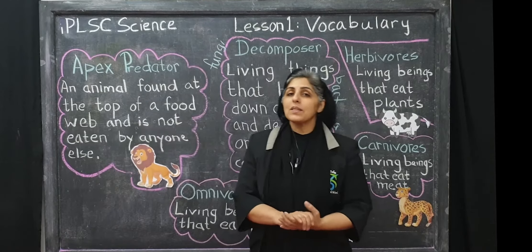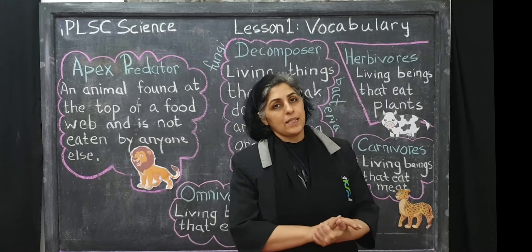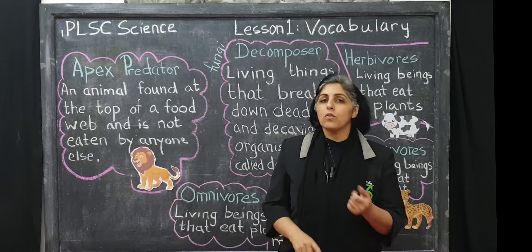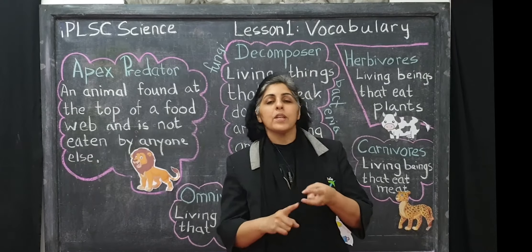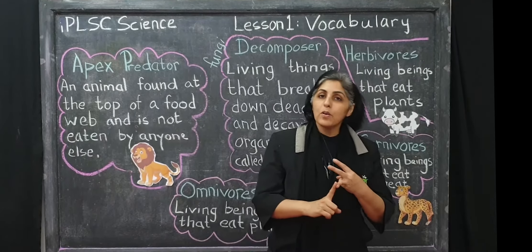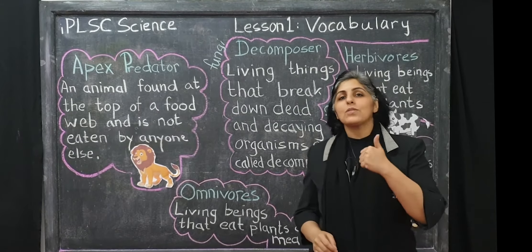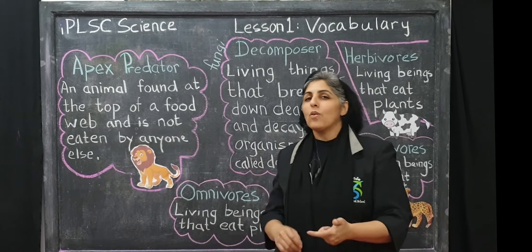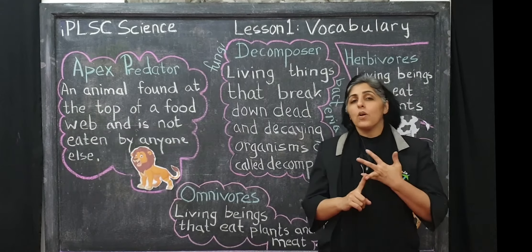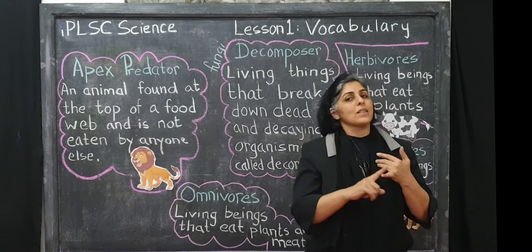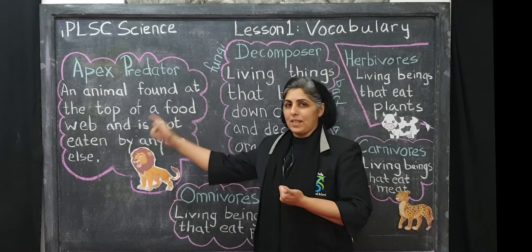This brings us to the end of Lesson 1 of IPLSC Science. So far we've covered food chains, food webs, decomposers, herbivores, omnivores, carnivores. We also know what a producer is, what a consumer is, and we've learned what an apex predator is.